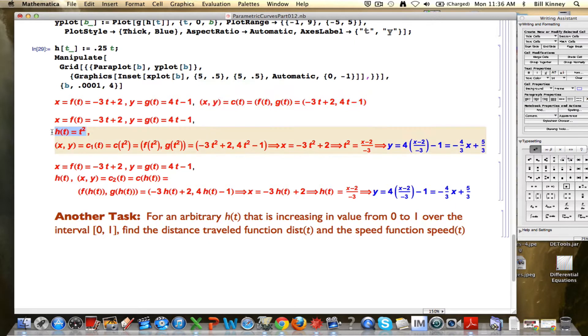To allow myself flexibility, to allow non-constant speeds, I introduced a function I called h of t, in this case h of t was t squared, and plugged h of t into the c function, also meaning you plug it into f and g, to get non-linear motion in terms of the speed.